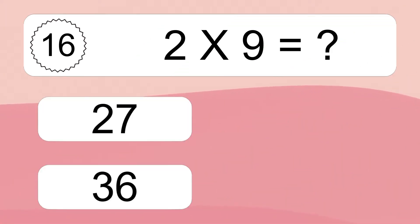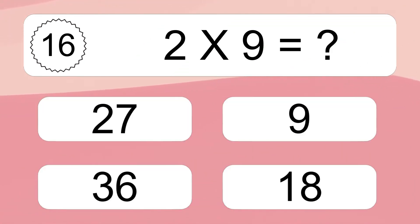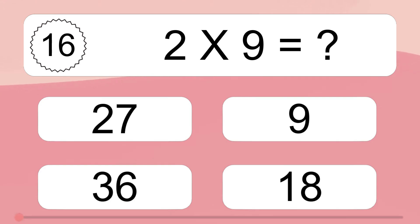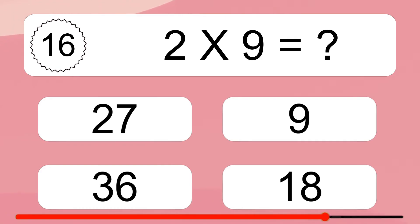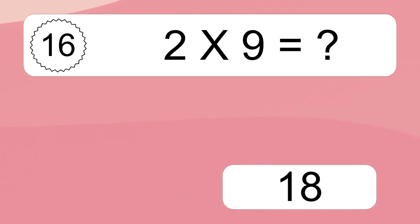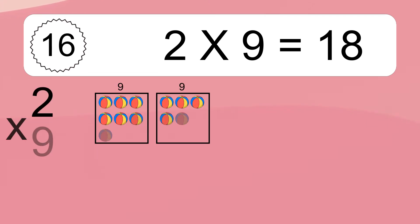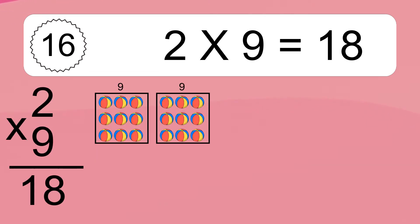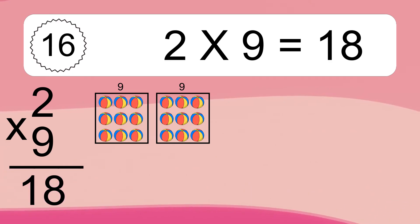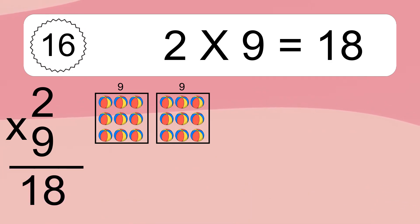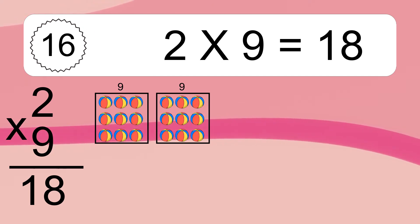Two times nine equals what? Two times nine equals 18. We have two boxes, and each box has nine colorful balls inside. If you count all the balls in all the boxes together, you will have two times nine balls. This equals 18 balls.